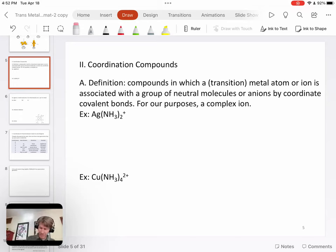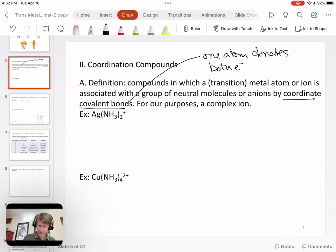Coordinate covalent bonds are going to be bonds in which one atom donates both electrons, and we can look at this and understand this in terms of Lewis acid-base theory.